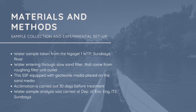The sample collection and experimental setup: the water sample is taken from the Ngagel 1 WTP Surabaya river water entering through the slow sand filter that comes from the roughing filter unit outlet. This slow sand filter is equipped with geotextile media placed on the sand media. Acclimation is carried out for 30 days before the treatment process and the water sample analysis was carried out at the Department of Environmental Engineering ITS Surabaya.